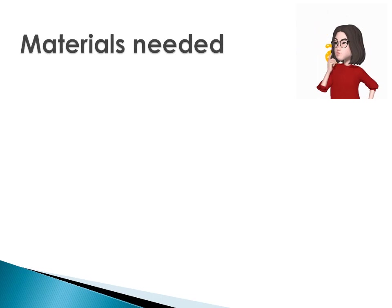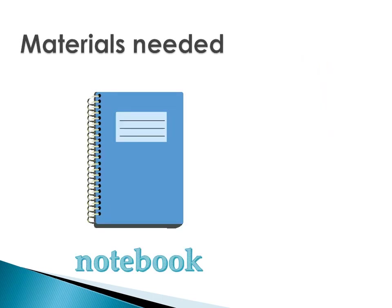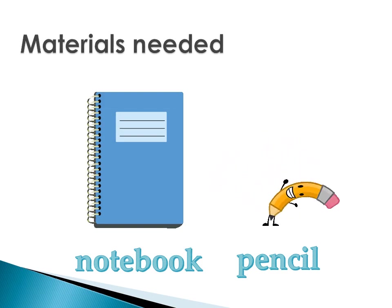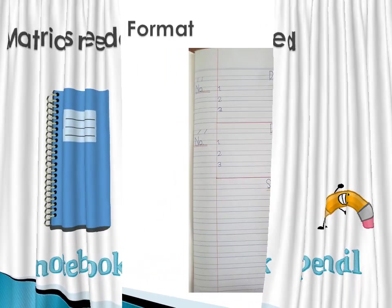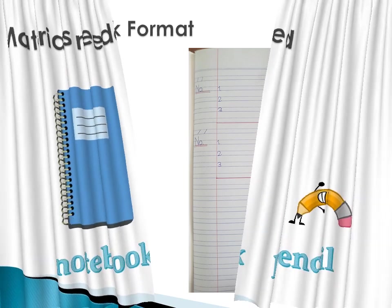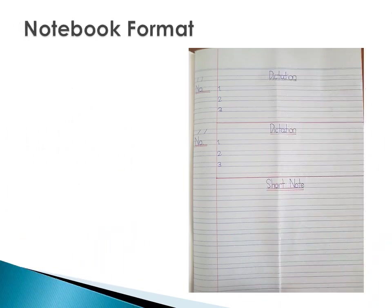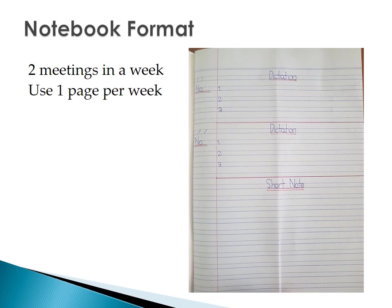So for us to start, we need two materials. One is a notebook and the other one is a pencil. As you can see on the screen, we have the format of our notebook. Please take a look closely at the picture. Now we are going to meet twice in a week, but we will be using one page every week only.